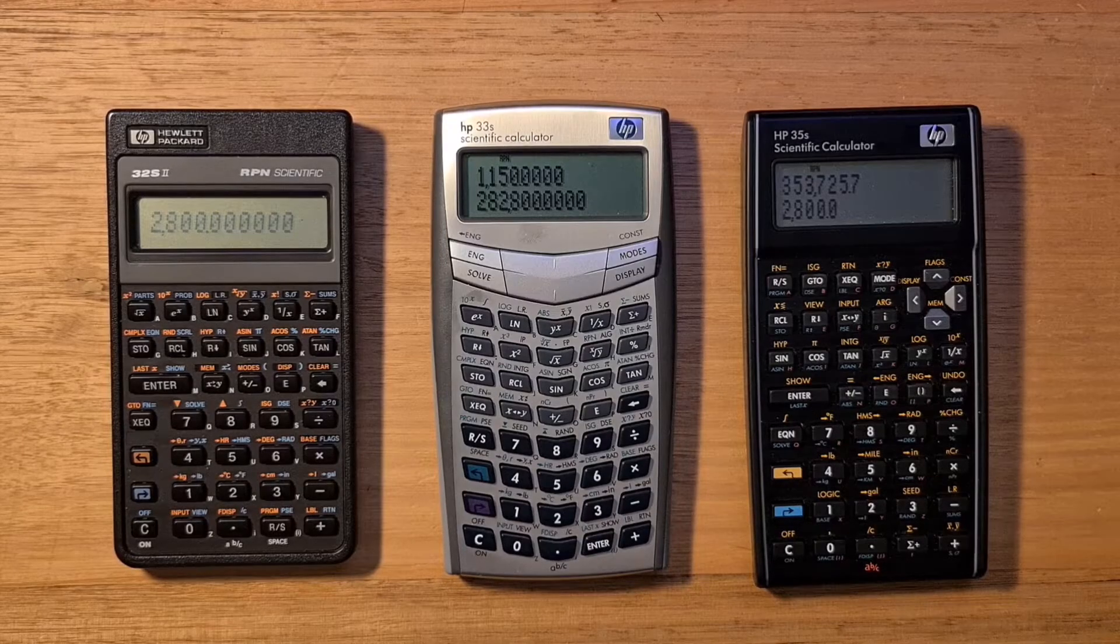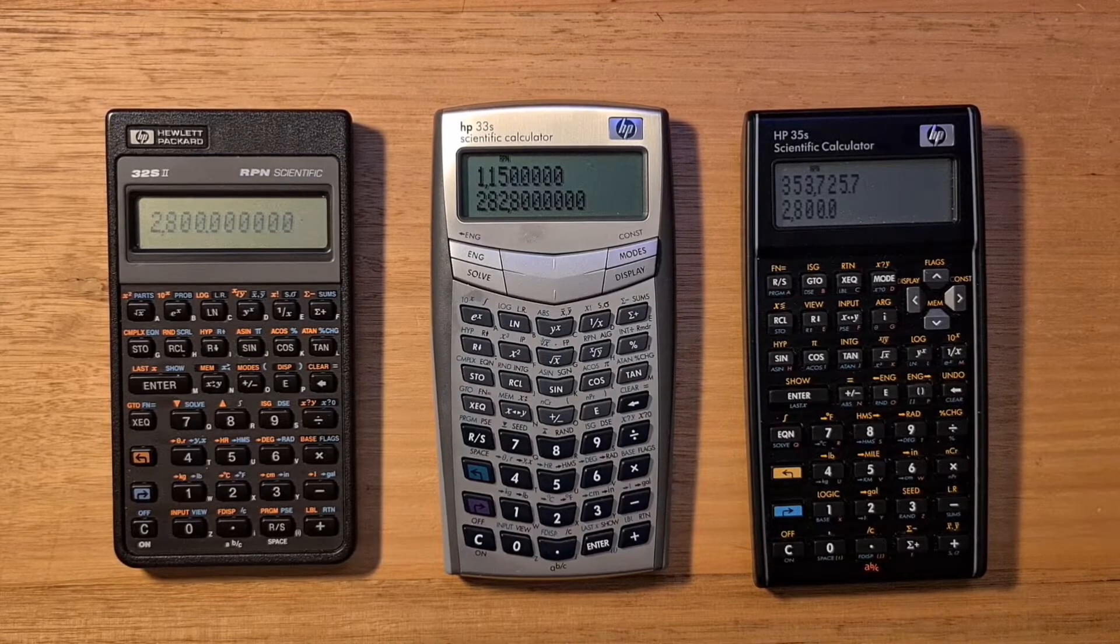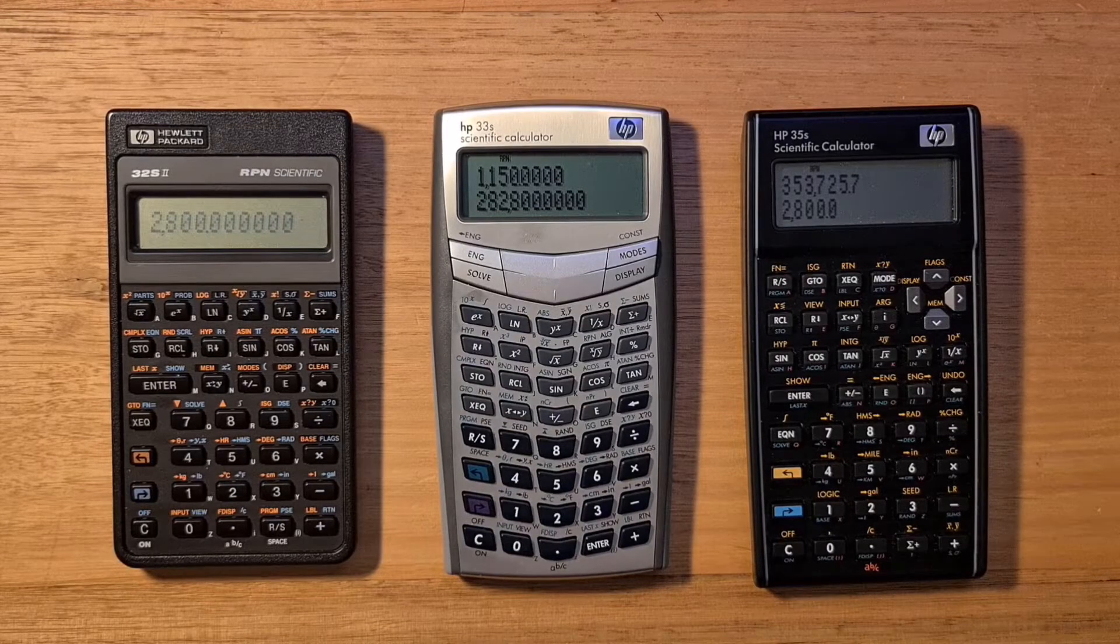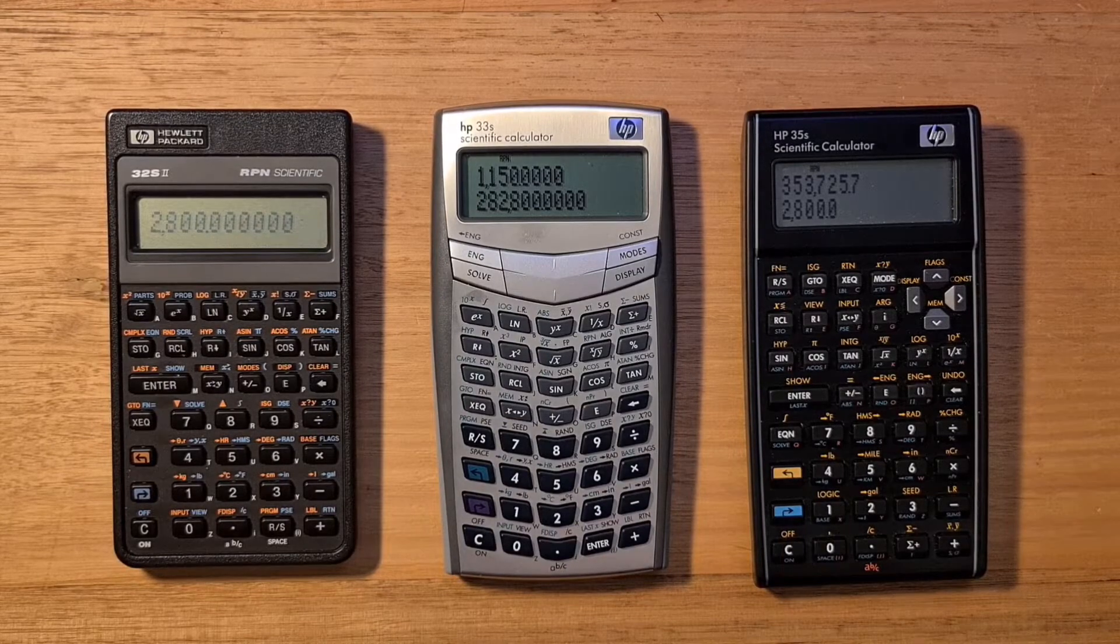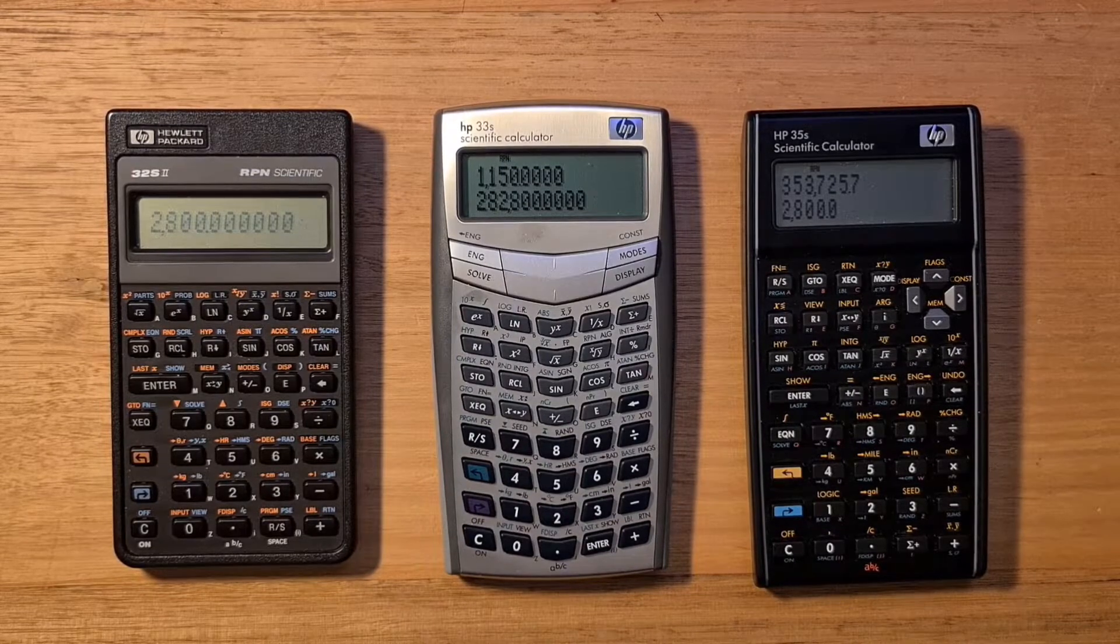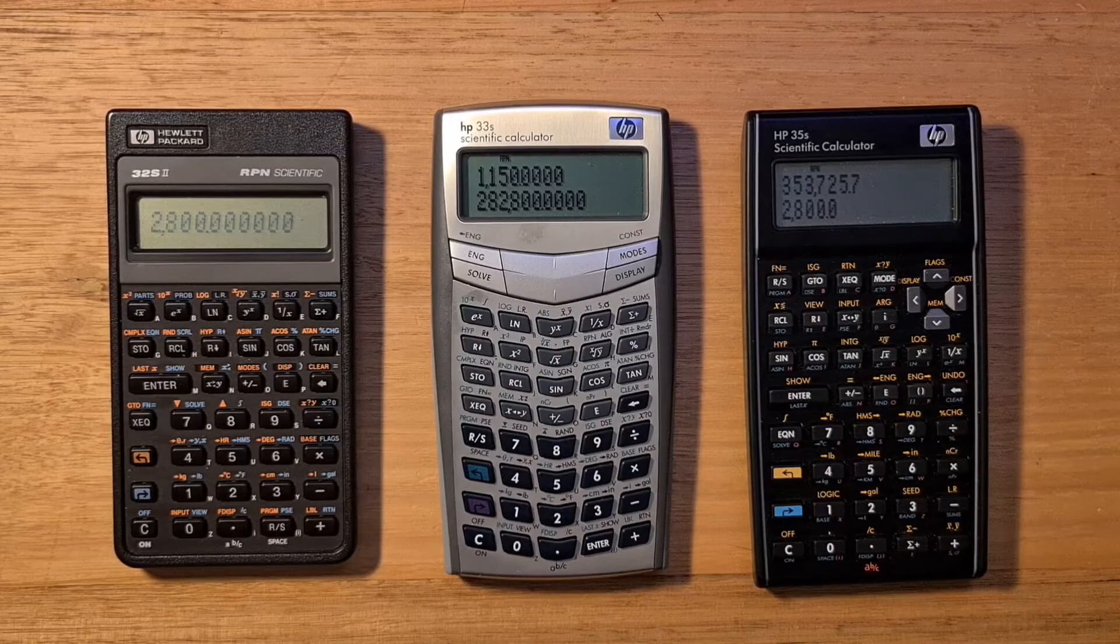Hi everyone. This video is about three of HP's scientific calculators: the 32S2, the 33S, and the 35S. It's interesting to look at the different product design decisions HP made across this series of devices, because broadly these calculators have very similar functionality, but physically they are quite different.